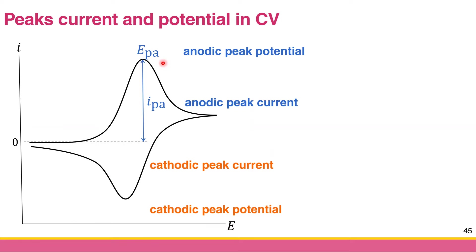In contrast, for the reduction or cathodic peak, the height of the reverse peak is called cathodic peak current or IPC, and the position of this peak is called cathodic peak potential or EPC. So we can obtain anodic peak potential, anodic peak current, cathodic peak potential, and cathodic peak current. Usually the data analysis software can give you all four of these parameters.